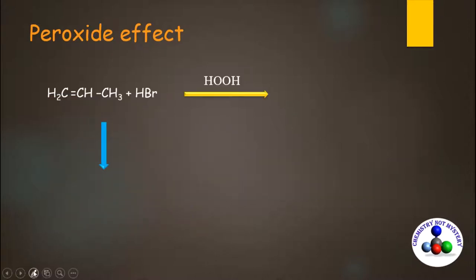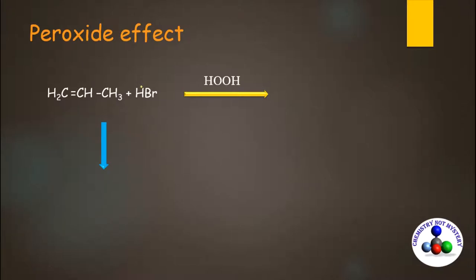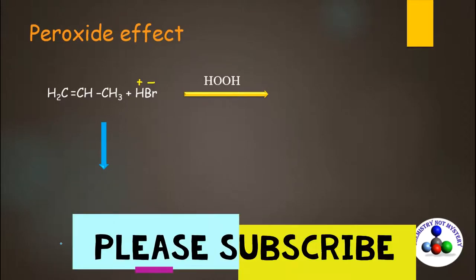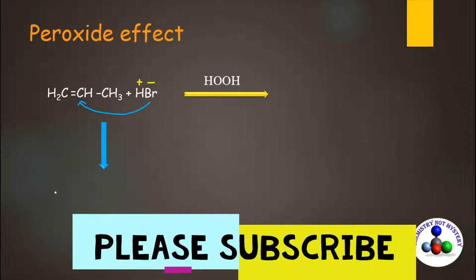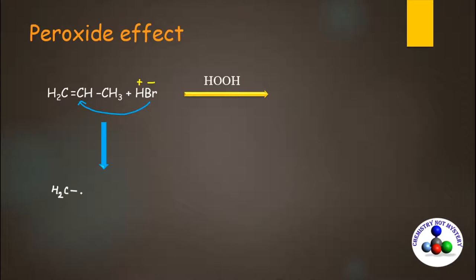When you add HBr to propene, first you split it into electrophile and nucleophile: HBr splits into H⁺ and Br⁻. In the absence of peroxide, the negative part of the reagent goes to the sp2 carbon that has fewer hydrogens. So Br⁻ gets attached to the middle carbon, giving CH₃-CHBr-CH₃, and hydrogen gets attached to the terminal carbon — that's how you get the Markovnikov product.